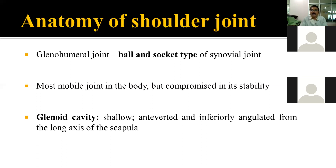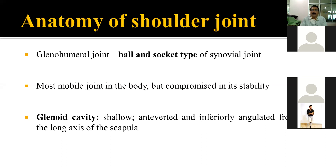It has flexion, extension, abduction, adduction, internal rotation, external rotation, and moreover circumduction, which is not actually a primary joint movement but a summation of all movements. So it has a wide range of movement, and since it has this wide range of movement, the chances of dislocation are a bit high in the shoulder joint in comparison to other joints.